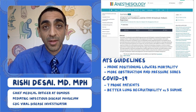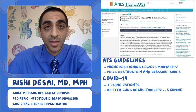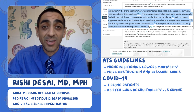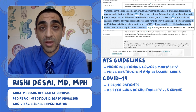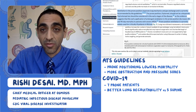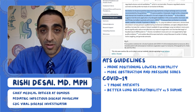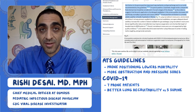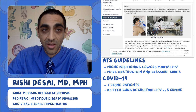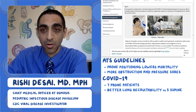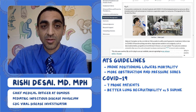Looking at the Wuhan paper, they discuss prone ventilation as something that was widespread in its use in Wuhan. They include pictures of how it was used, and they say it should be considered early in the disease, not late. One picture shows a patient who was intubated and ventilated while prone — you can see the person is on their chest.